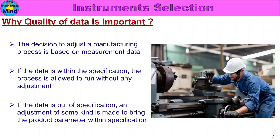Suppose the actual part dimension is out of spec compared to the drawing specification — then the process is allowed to do some adjustment until the part dimension is within spec. Once within spec, the machine will continue to run without any adjustment. So the process uses measurement data to decide whether to adjust. The quality of data is very important.